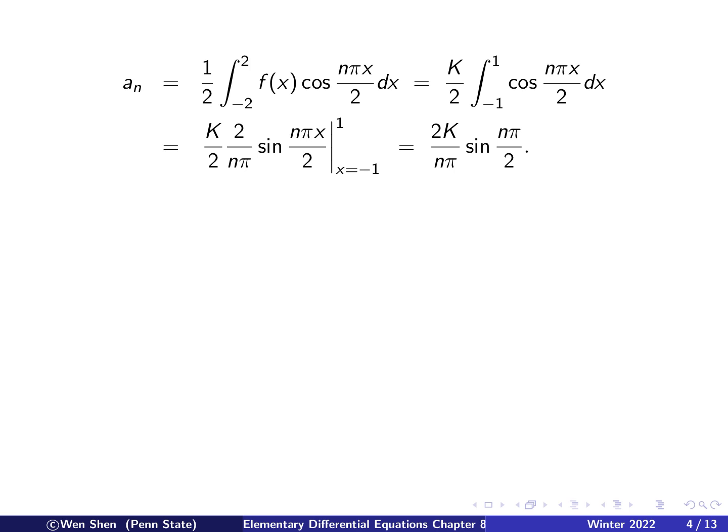So we see that if we put the upper limit 1 here, we get sine nπ over 2 minus the lower limit, x is negative 1. You get a negative sign inside the sine, which you can move out. And then it becomes plus the same thing again. So it's just this term times 2. And then the 2 cancels the 2 and cancels the half here, 2 down here. And then we'll just get 2K over nπ, sine of nπ over 2.